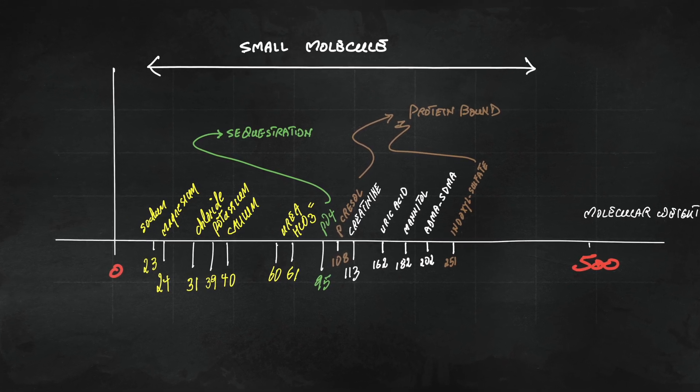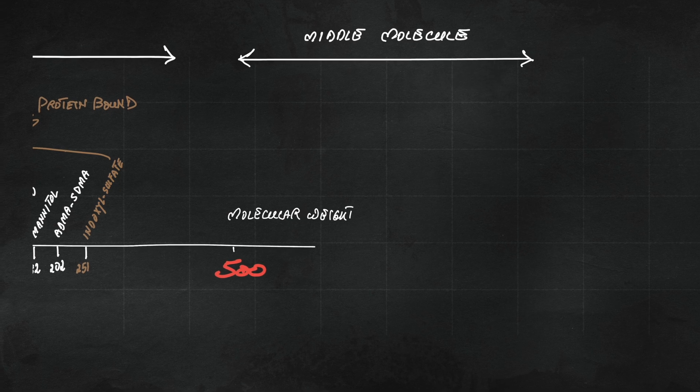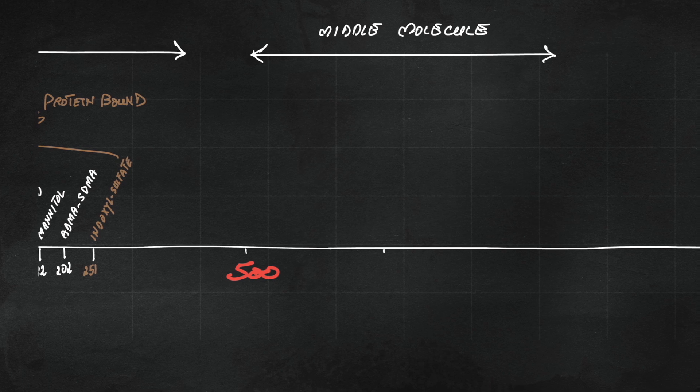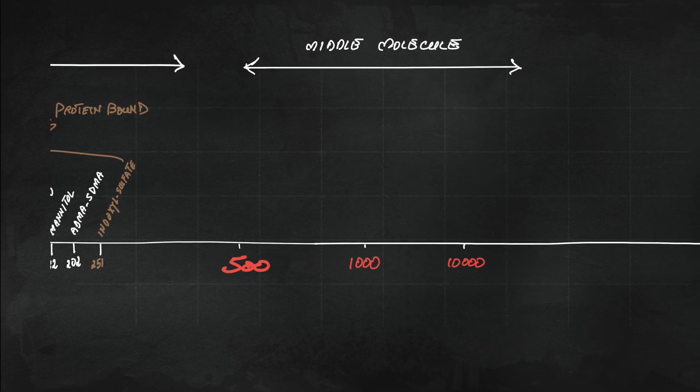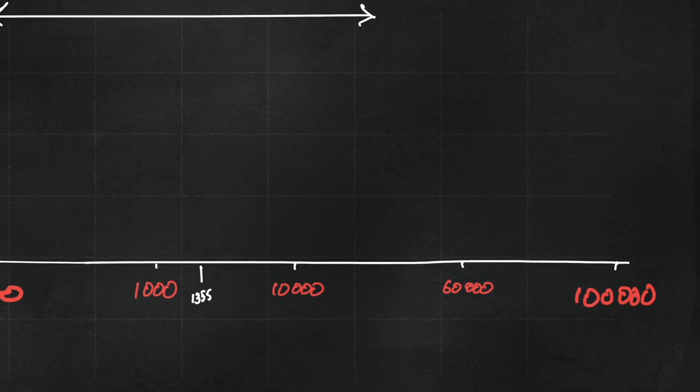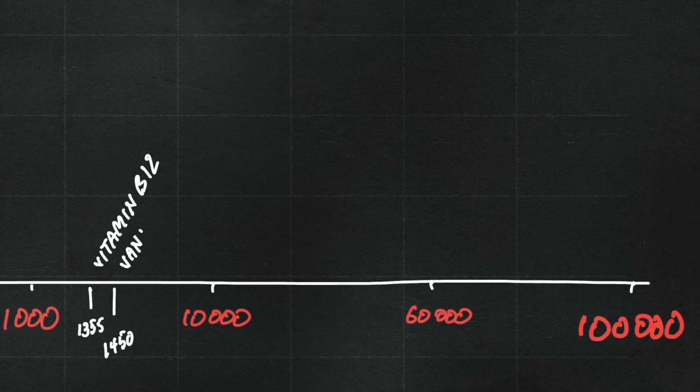And of course there's also metamolecules which are much bigger than your electrolytes and urea. These are typically exemplified by beta-2 microglobulin, which sits in that 12,000 dalton range and has been associated with amyloidosis.